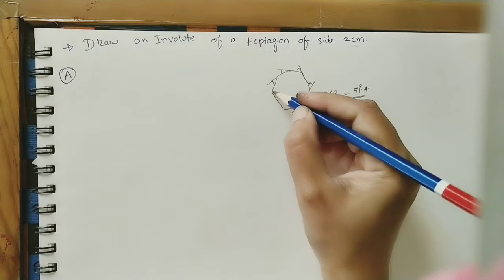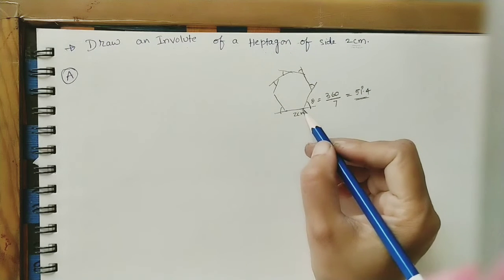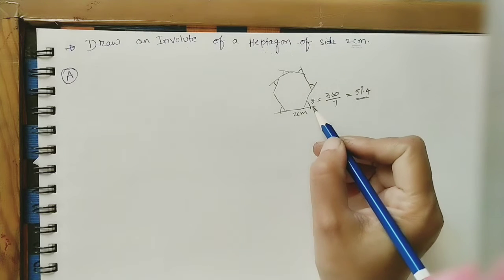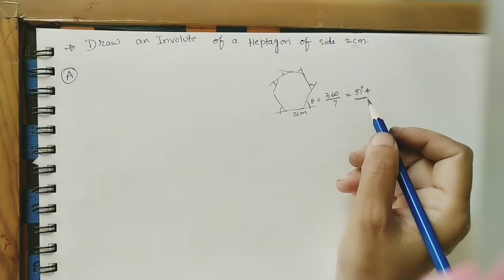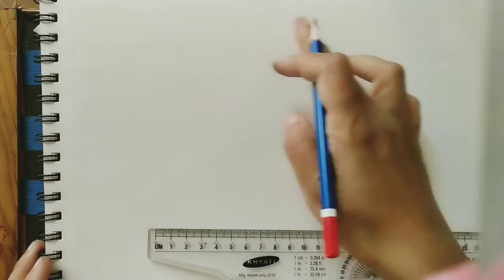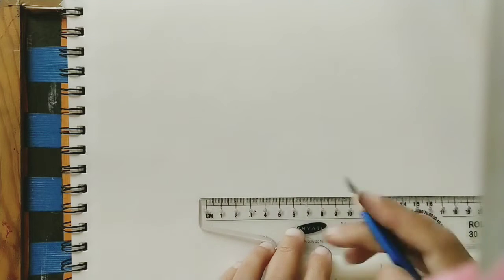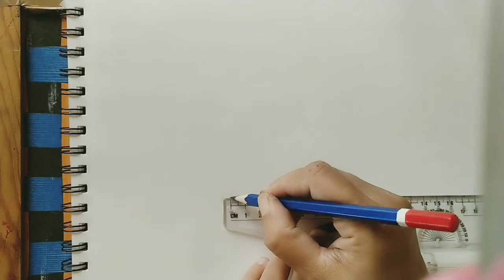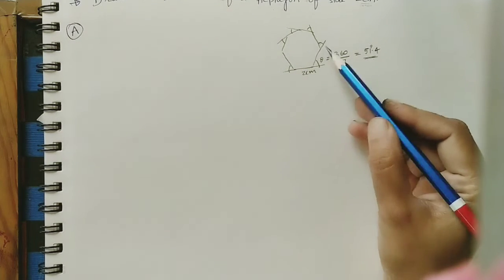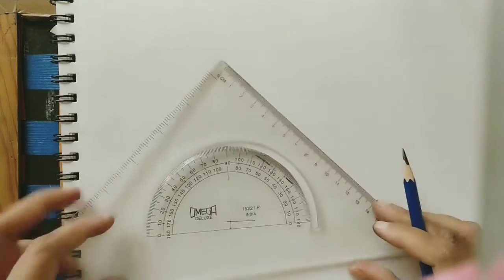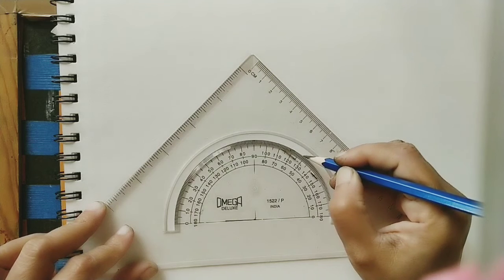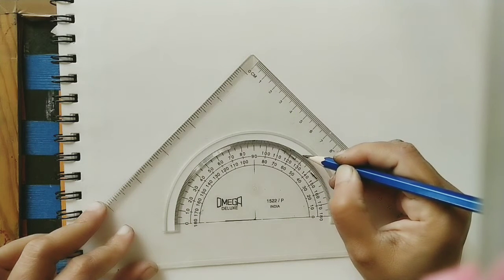Each outer angle is 51.4 degrees. If you extend each side, that exterior angle is 51.4 degrees for every vertex. Now draw the initial two-centimeter line, then take another two-centimeter line at 51.4 degrees using a protractor. Place the polygon on one side of the sheet so the involute has room to develop. Using the protractor, mark 51.4 degrees — approximately 51 — and draw the next two-centimeter line in that direction.